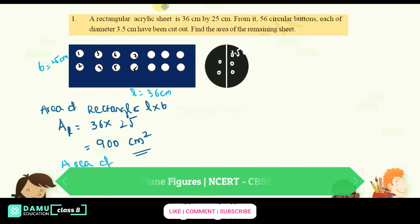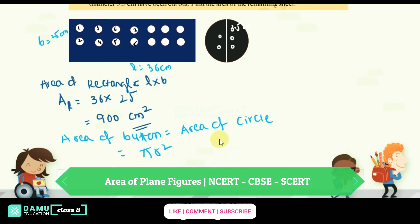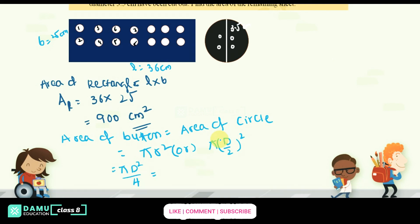Then find area of the circle. So area of button, that is area of circle. Area of circle, so what is that is pi r square. But the argument diameter, you can write diameter formula also. How you can write here is pi, r place d by 2 whole square, that is pi d square by 4.